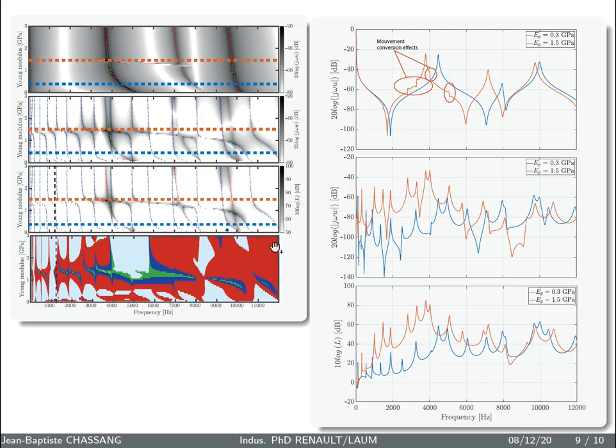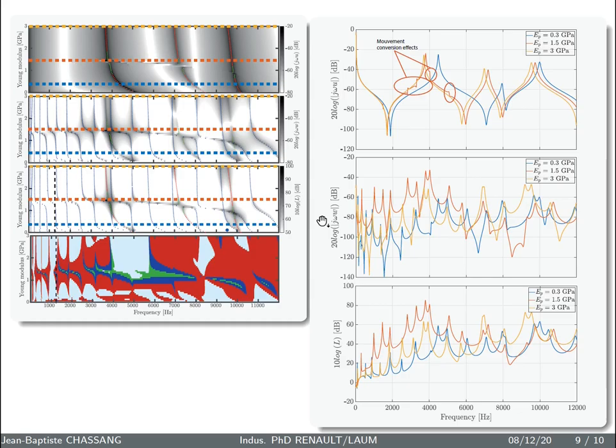Now let's take a view on the three low Young modulus responses and compare these results to the one around 1.5. Two things are noteworthy. Flexural impacts the compression movement because of irregularities we can observe in the responses such as those surrounded. If the flexural responses are very low at low joint stiffness, there is no longer the case around 1.5 GPa, with levels close to those in compression. In addition, the structure radiates much more as shown in the last figure.